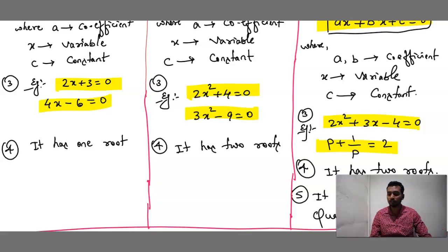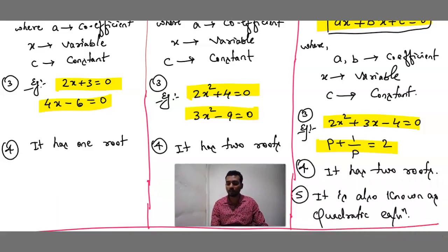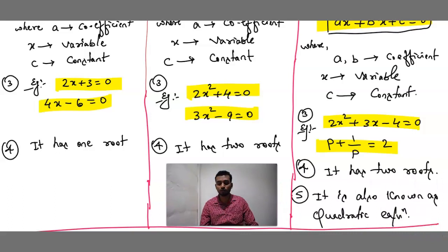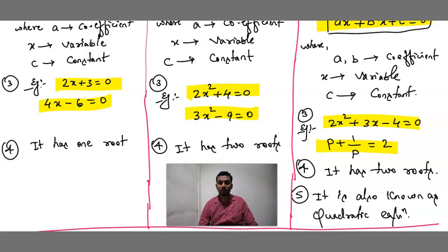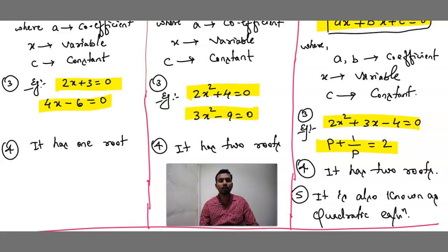Now we can see here: a linear equation has 1 root because the power is 1. A pure quadratic equation has 2 roots because the power is 2. An affected quadratic equation also has 2 roots since the highest degree is 2, so it is also known as quadratic equation.